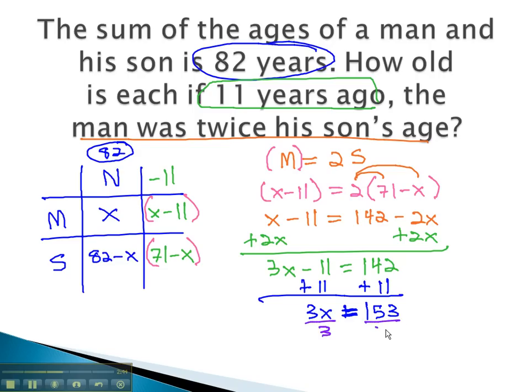Dividing both sides by 3 will give us x equals 51.